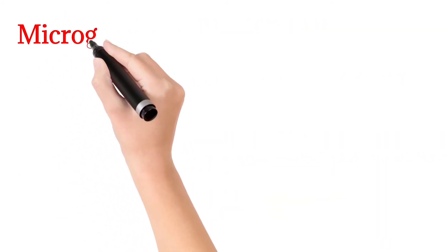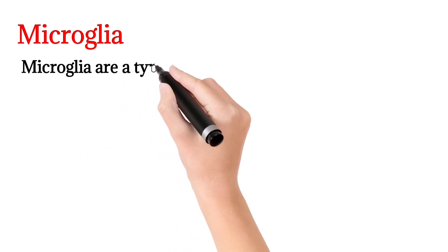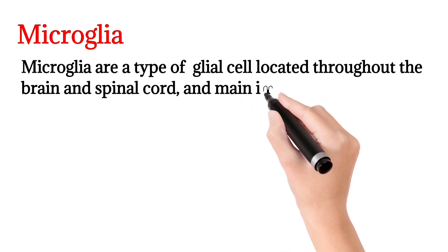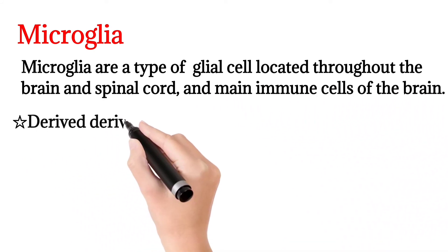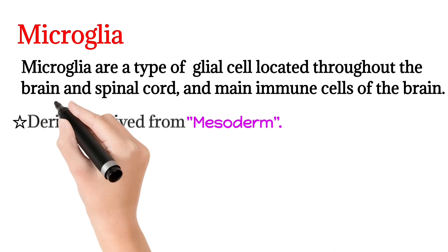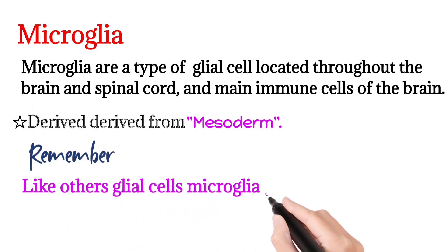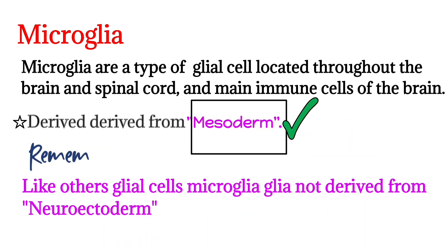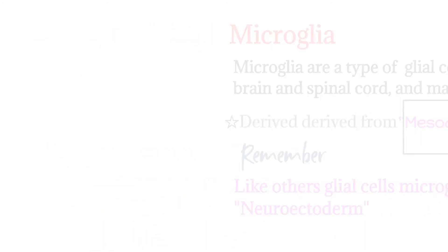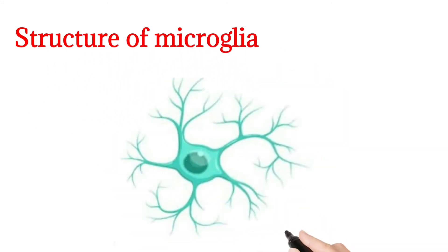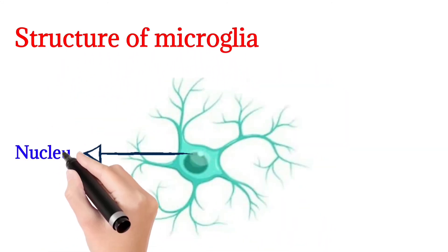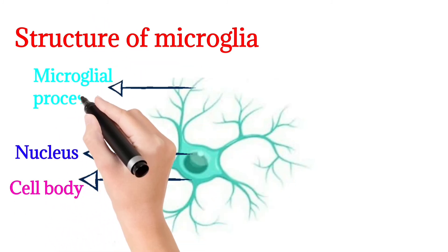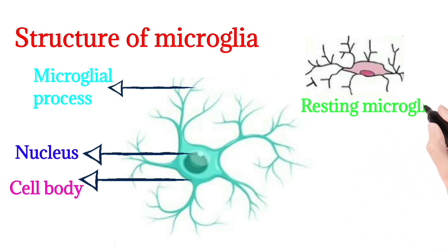The next type of cell in the central nervous system is microglia, located throughout the brain and spinal cord. It is the main immune cell of the brain. Microglia are derived from mesoderm, whereas other glial cells are derived from the neuroectoderm. The structure of microglia includes a nucleus, cell bodies, and microglial processes.